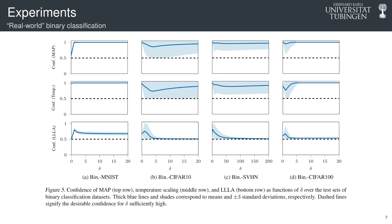And here's some experiment on real-world binary classification dataset. So basically, we just pick two labels on each dataset and train the network and apply a Laplace approximation on top of that, especially the last layer one. And as we can see on the last row of this figure,